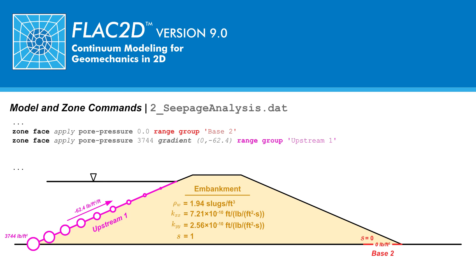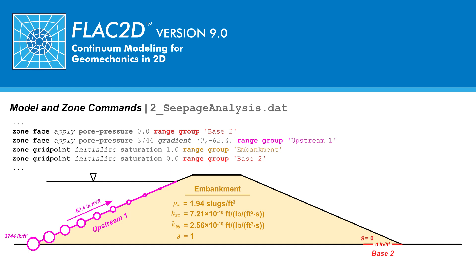In tutorial 1, the embankment was dry with degree of saturation equal to 0. For the steady-state seepage analysis, the degree of saturation could be re-initialized. For example, one possibility would be fully saturated (saturation = 1) except the drain interface which would be dry (saturation = 0). However, in this tutorial it was found that a more accurate representation of the expected phreatic surface was found without re-initializing the saturation, and therefore these two commands were omitted.